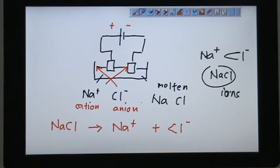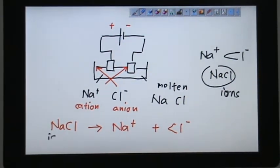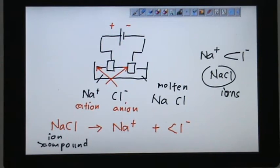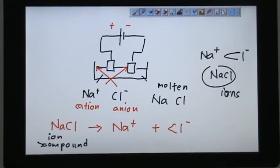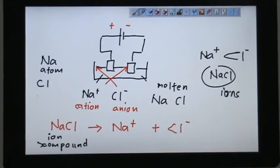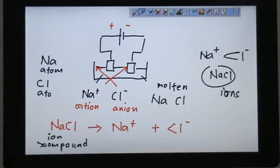And another thing about compound is their characteristic is totally different. Characteristics for this ion, which is a compound, is so much different from the characteristics of Na atom itself. And it's so different from the Cl atom itself.